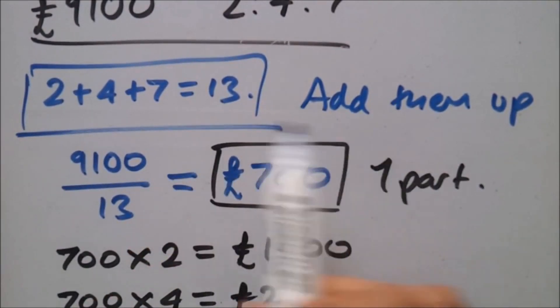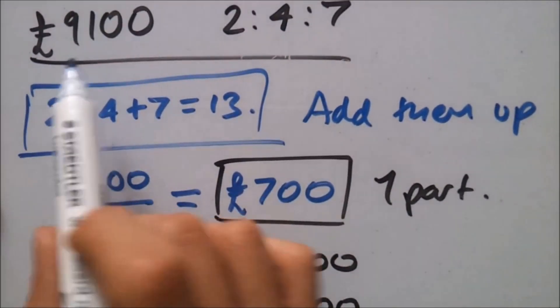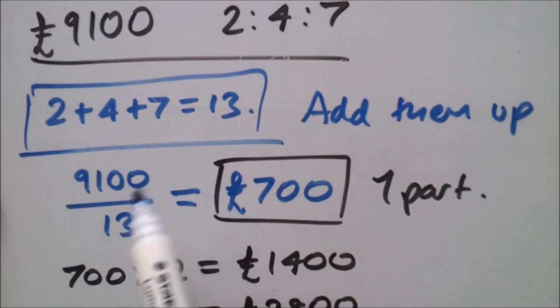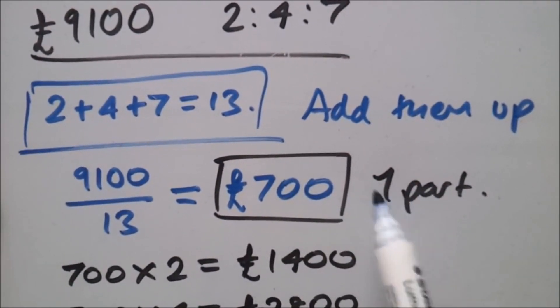Next step is to divide it by how many added up. So, we had 9,100 divided by the total amount of 13. And that's to find the one part.